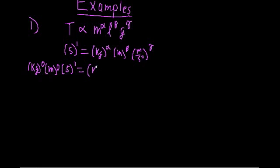So we're going to be left over with kilograms to the alpha times meters. Now we have a meter to the beta here times a meter to the gamma here. So we're just going to say that this is meters to the beta plus gamma. And now we're going to be multiplying that by seconds. Here we have one over second squared raised to the gamma power. That's the same as seconds to the minus two gamma.